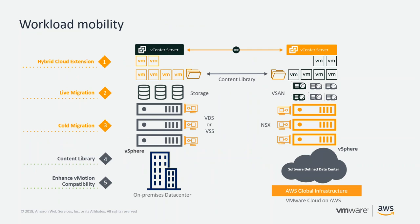For workload mobility, you have several options available: Hybrid Cloud Extension (HCX), which comes with VMware Cloud on AWS; live migration via vMotion for moving VMs from on-premises to VMware Cloud on AWS; cold migration; and content library synchronization so you can centralize templates and deploy them to VMs either on-premises or in VMware Cloud on AWS. Enhanced vMotion capabilities are also available.